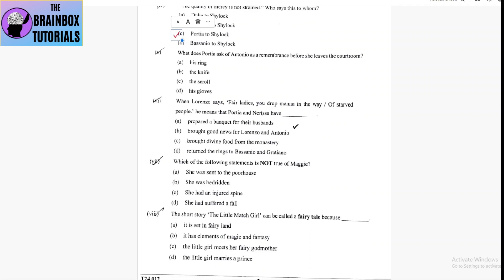Number 5, what does Portia ask of Antonio as a remembrance before she leaves the courtroom? His ring, the knife, the scroll, his gloves. That is his gloves. Option number D is correct. He asked for the gloves of Antonio and ring from Bassanio.